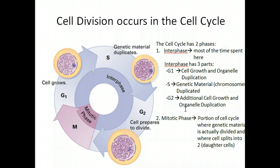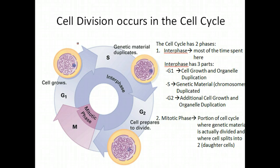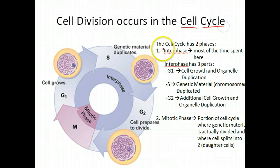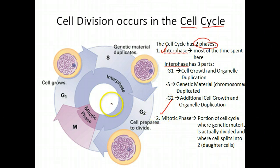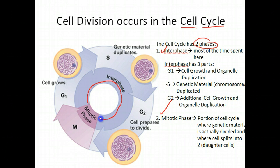You can't have a discussion of cell division unless you talk about the actual cell cycle. This is the process that the cell uses as it goes from one cell to two cells, and from two cells to four cells and so on. The cell cycle has two phases: interphase and the mitotic phase. The interphase is the vast majority of the cell cycle — most of the cell cycle's time is spent in interphase.